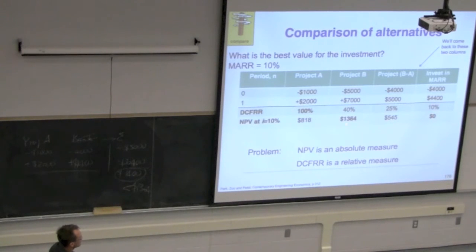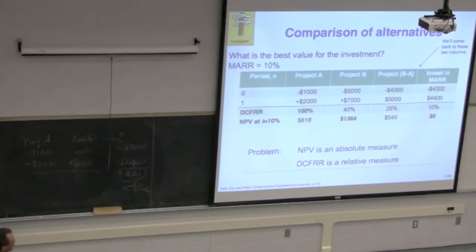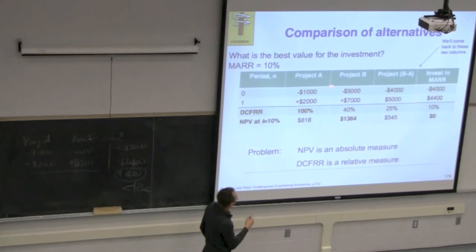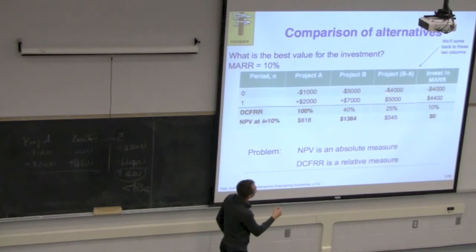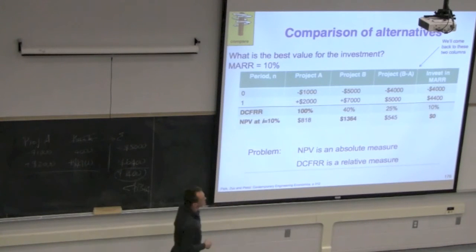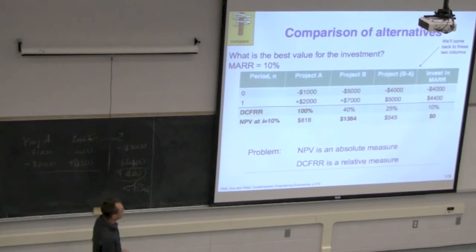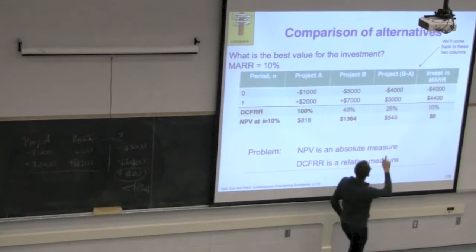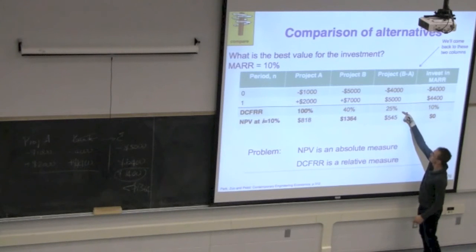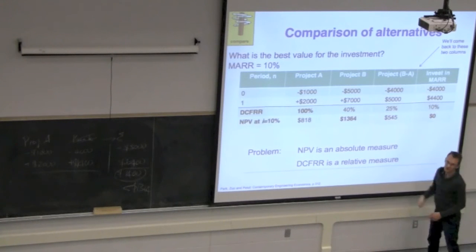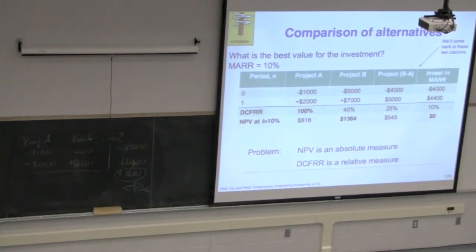So from the NPV perspective, Project B seems to be the better choice. From the DCFRR perspective, Project A seems better. Now let's look at it from a different approach: take the difference in cash flows between Project B and A. The incremental investment is an additional $4,000, which returns an incremental cash flow of $5,000. Computing the DCFRR on those two money flows gives a 25% rate of return, and the NPV on that incremental amount is $545.